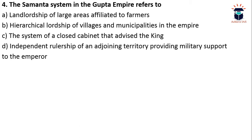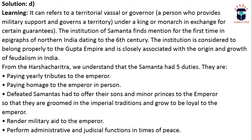The next question is: the Samanta system in the Gupta Empire refers to — A) land lordship of large areas affiliated to farmers, B) hierarchical lordship of villages and municipalities, C) a closed cabinet advising the king, D) independent rulership of an adjoining territory providing military support to the emperor. The answer is D. It refers to a territorial vassal or governor — similar to regional satraps, though the term 'satrap' was used during the Indo-Greek period.